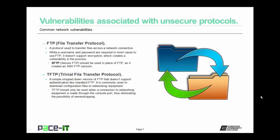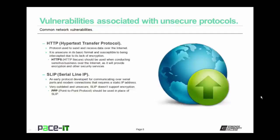TFTP, or Trivial File Transfer Protocol, is a simple stripped-down version of FTP that doesn't support authentication like standard FTP, so it's even more unsecure. It is commonly used to download and upload configuration files for networking equipment. TFTP should only be used when a connection to networking equipment is made through the console port, thus eliminating the possibility of eavesdropping. That console port should have its own security measures in place. Everyone is fairly familiar with HTTP, or Hypertext Transfer Protocol. It's the protocol used to send and receive data over the internet and is unsecure in its basic format due to its lack of encryption.